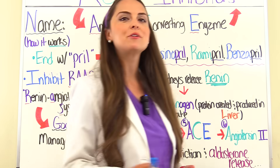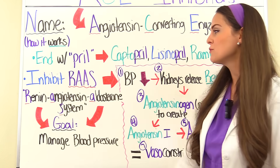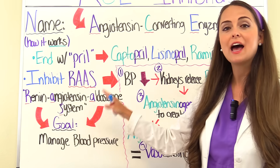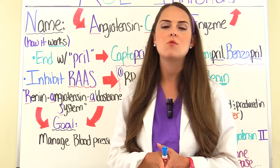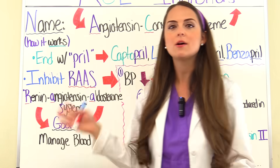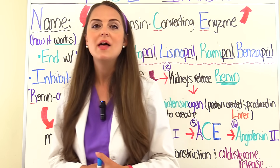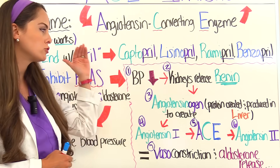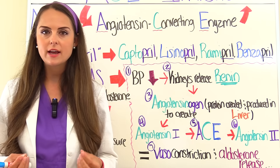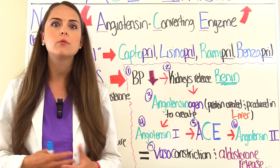ACE inhibitors inhibit the RAS system — the renin-angiotensin-aldosterone system. If you can understand how this system works, learning ACE inhibitors is easy because they do the opposite of what the system is supposed to do. When a patient's blood pressure drops, the kidneys sense this and release renin into the circulation.